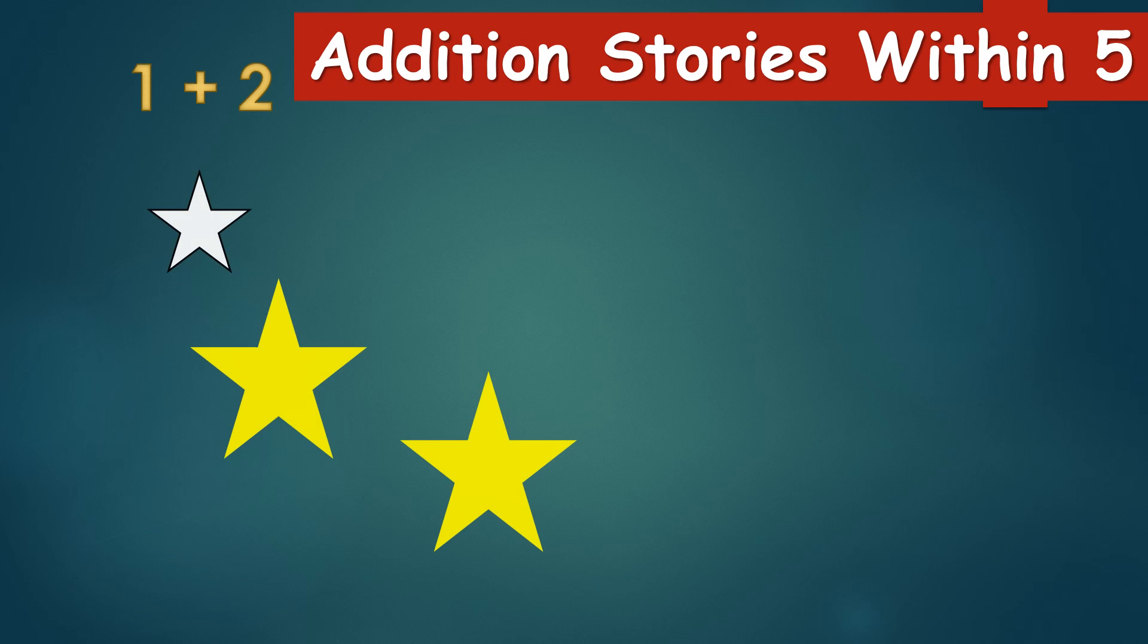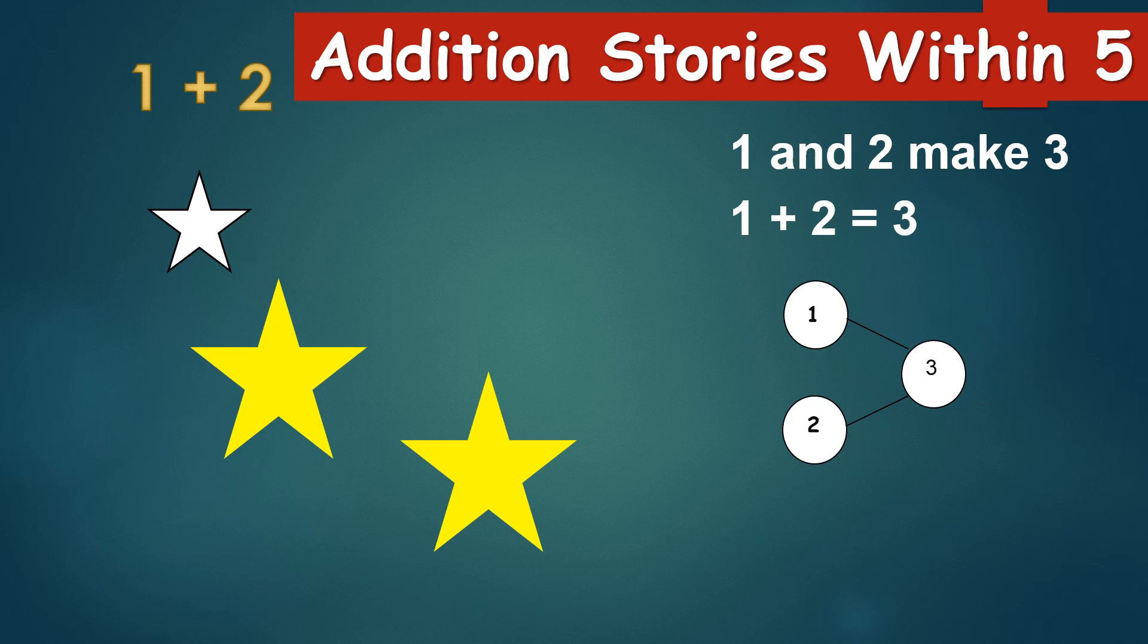There is 1 white star and 2 yellow stars. 1 and 2 make 3, 1 plus 2 equal to 3.